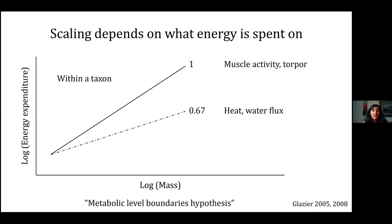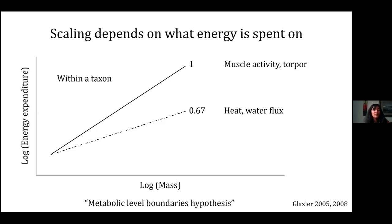So why is that? What are they spending energy on that makes how they scale their energy so unusual compared to other birds? Remember the metabolic level boundaries hypothesis — if you're scaling closer to one, you're spending energy on more power-related processes. Hummingbirds can use an incredible strategy called torpor every night if they want — kind of like hibernation — where they can save energy by shutting off most of their metabolic functions, spending only about 15% of the energy they normally use during the day. Torpor scales with a slope close to one, whereas heat and water flux scales closer to 0.67. So maybe that allometric slope is affected by what they're spending energy on.